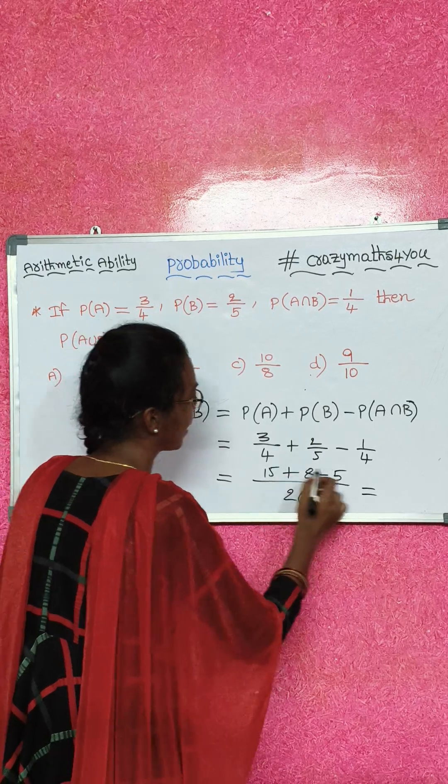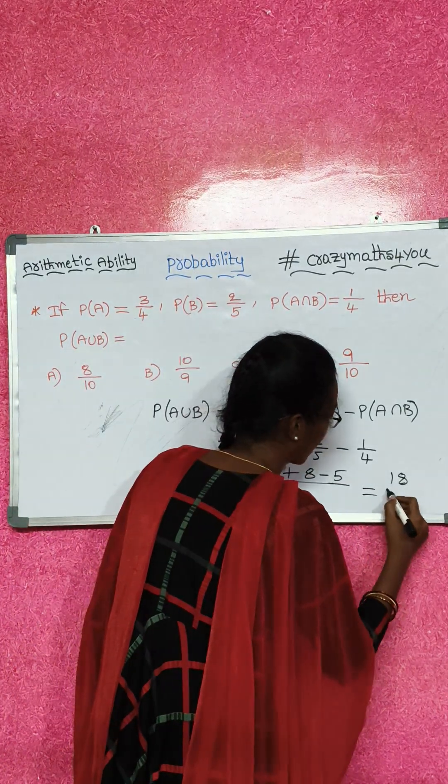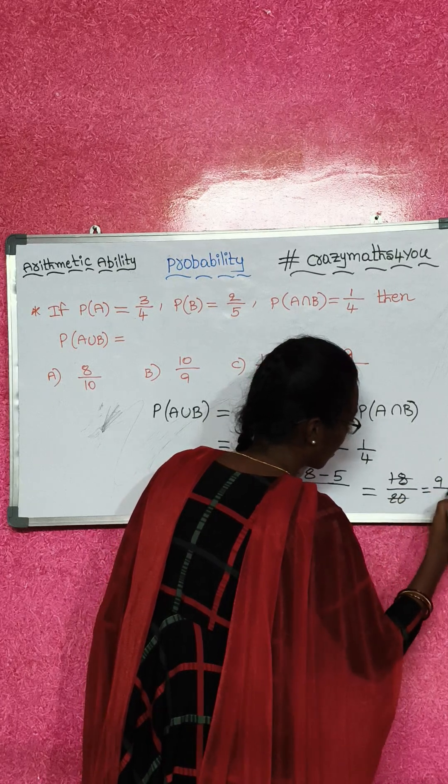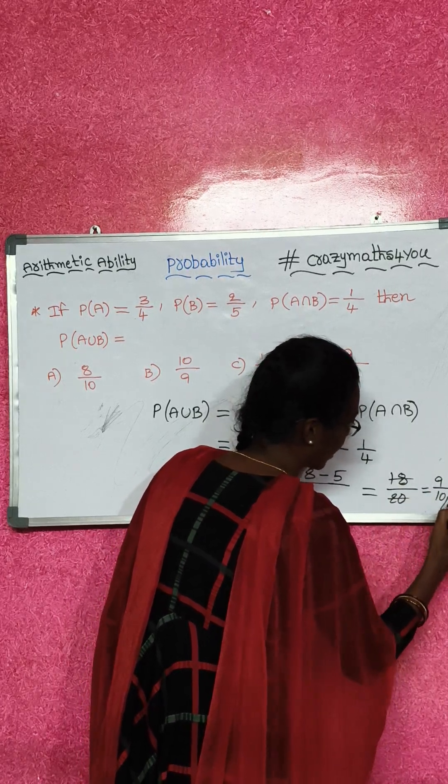Now 15 plus 8, minus 5. 10 plus 8 equals 18 by 20. Now I cancel with 2 table. 2 nines are 18, 2 tens are 20. 9 by 10.